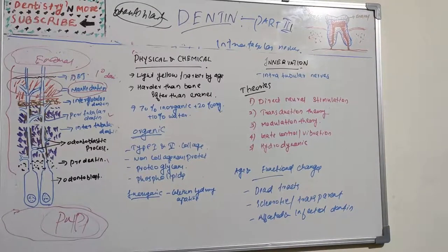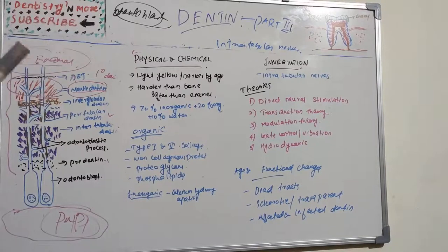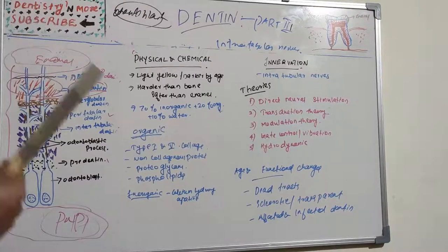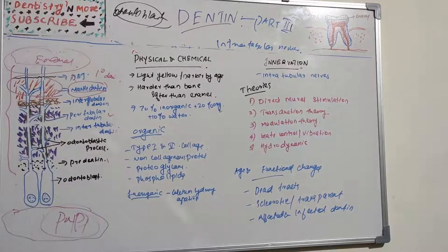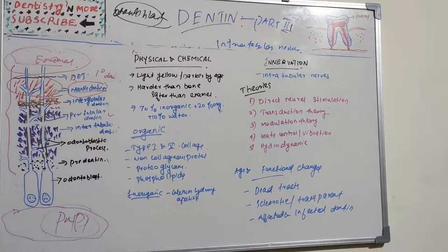The first theory is direct neural stimulation, according to which nerves in dentine get stimulated directly. However, the main drawback is that nerves in dentinal tubules are not commonly seen, and even if present, they do not extend beyond the inner dentine. Topical application of local anesthetic agents does not abolish sensitivity, so this theory is not well accepted.